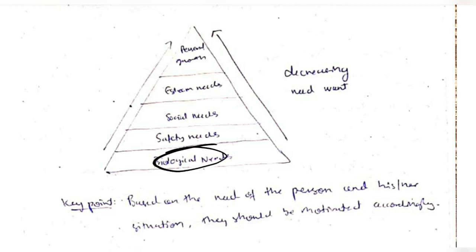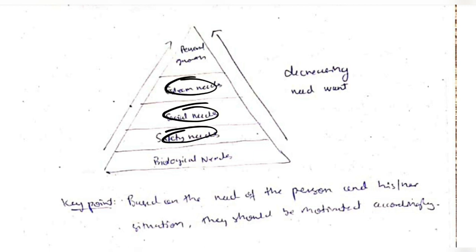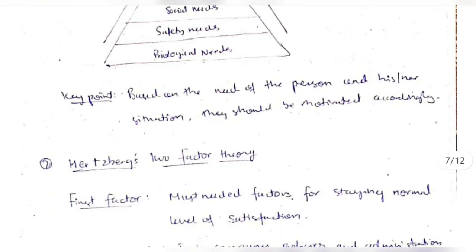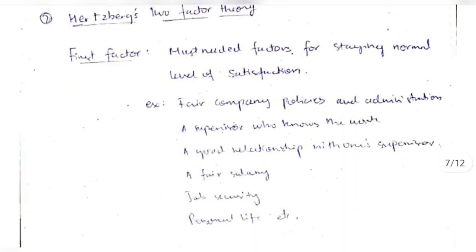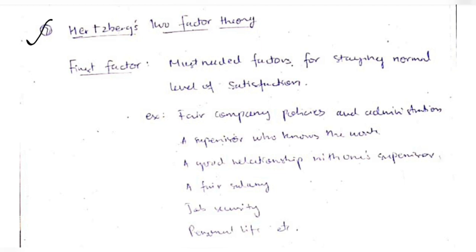After biological needs comes safety needs, then social needs like friendship, then esteem needs which include self-confidence and personal growth. The key point is that based on the need of the person and their situation, they should be motivated accordingly.